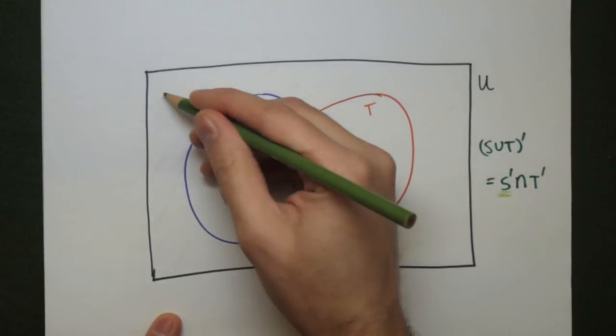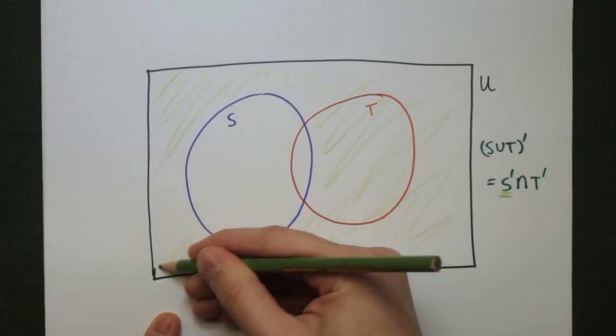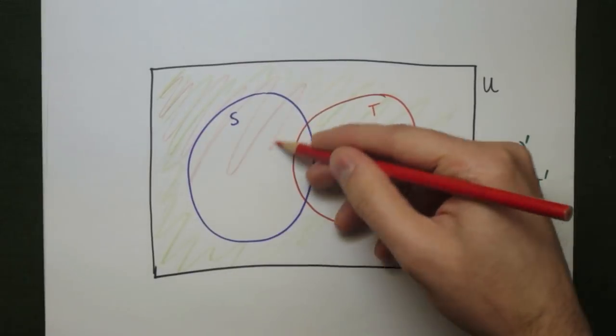So S complement is everything that doesn't include S, everything outside of the S circle. And T complement is everything outside of the T circle.